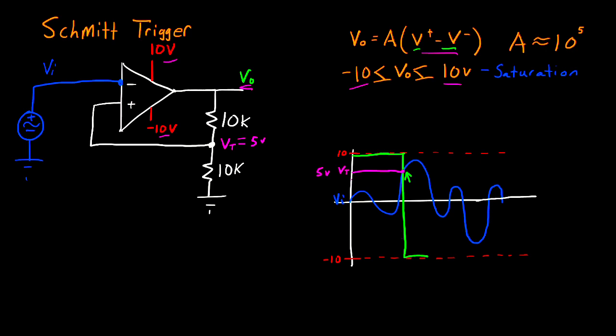So when the output of the op amp goes down to negative 10, the value of Vt is going to change. When Vo is equal to negative 10, Vt becomes negative 5. So now Vt is down here, and it's going to remain at negative 5 until the point at which Vi becomes less than Vt. When Vi becomes more negative than Vt, then this term is going to be a positive number that saturates our op amp back to 10 volts. So now the output becomes positive 10, and Vt correspondingly changes back to 5 volts.